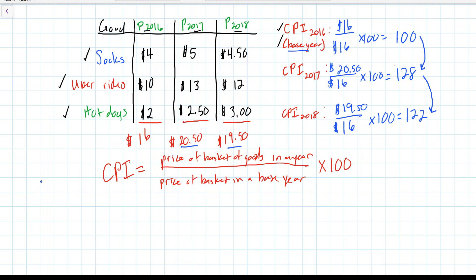So recall from a previous video that we had three years consumer price indexes: 100 for the base year of 2016, 128 for the second year of 2017, and for 2018, we had a CPI of 122. Let's go ahead and calculate inflation for each of these years.